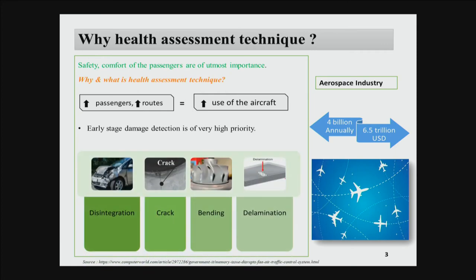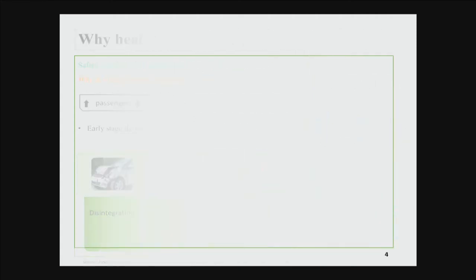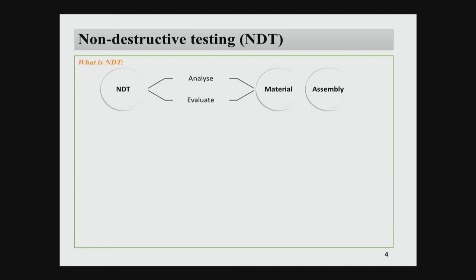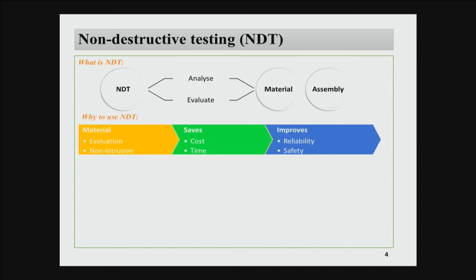Aircraft maintenance engineers must analyze disintegration, cracks, bending, and delamination in materials to obtain airworthiness certification. Various techniques are available. First let me talk about NDT — Non-Destructive Testing — where you can analyze a material, assembly, or component without destroying it. You evaluate and analyze it to get an assumption of where the errors are. It is very easy to use, requires no high level of education, saves cost, is less time-consuming, somewhat reliable, and safe.